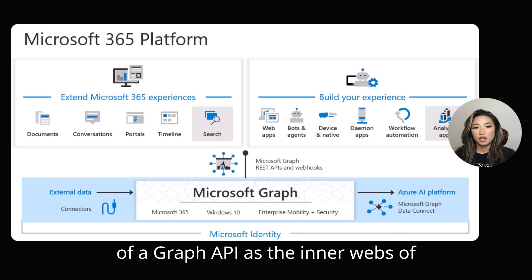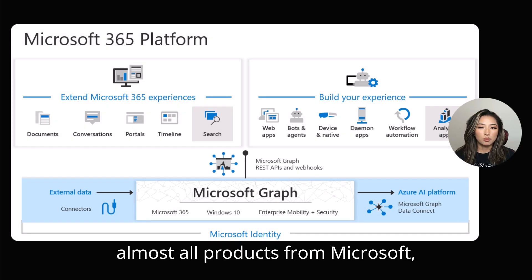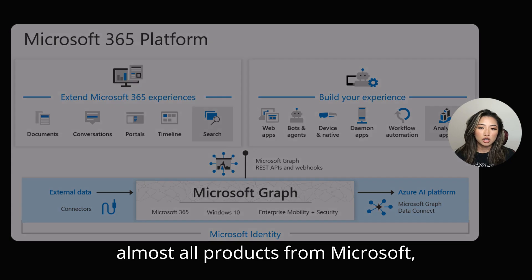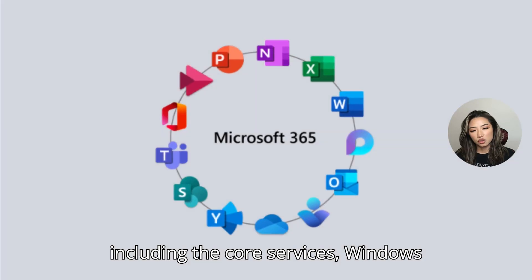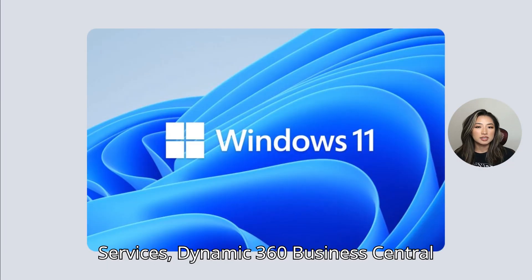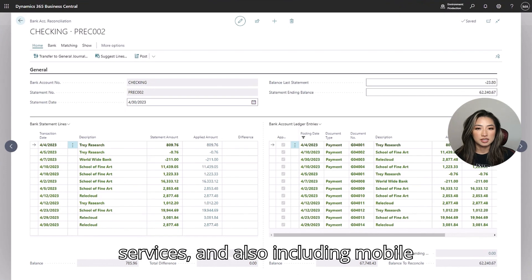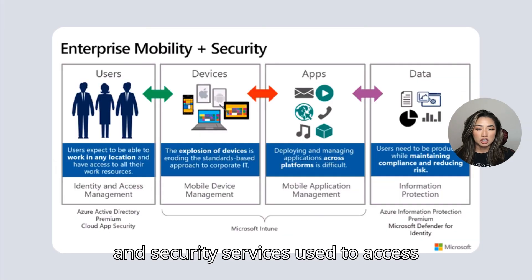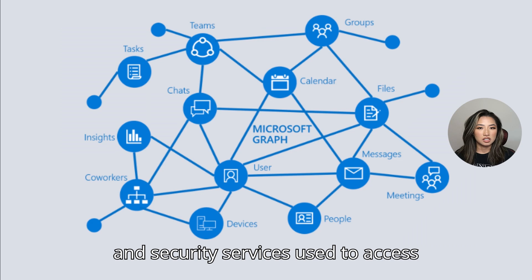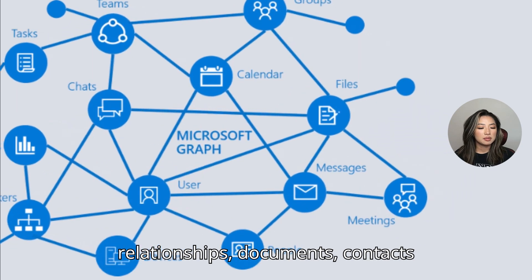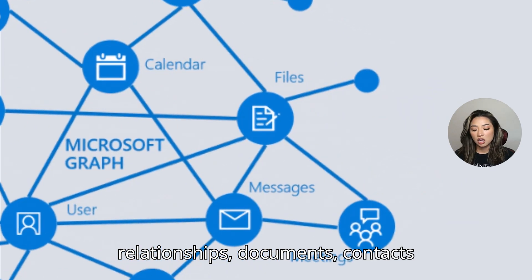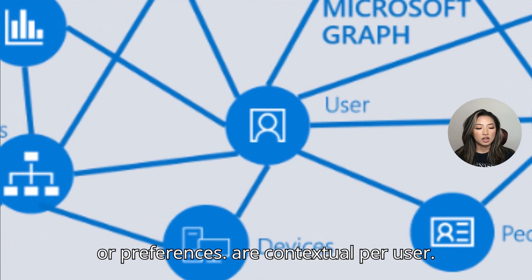Think of Graph API as the internet backbone of almost all Microsoft products, including core services, Windows services, Dynamics 365, Business Central services, and also mobile and security services. It's used to access relationships, documents, context, or preferences that are contextual per user.